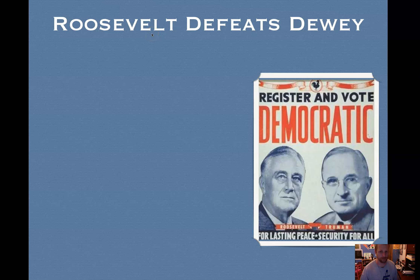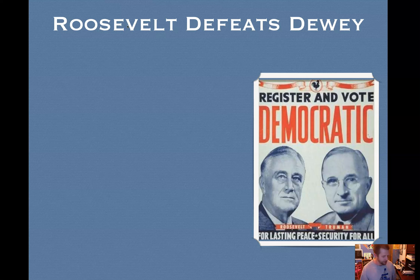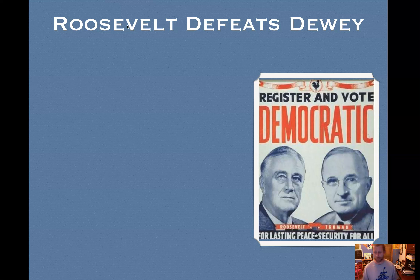Hello and welcome to Section 4 of Chapter 35 of the American Passion for U.S. History, for any of the U.S. History courses in high school or college. Today we're looking at Roosevelt defeats Dewey through the Holocaust. This is a really long chapter — we're actually going to have five videos for this chapter, but World War II is really big and there's a lot of material to cover. So let's get into it.